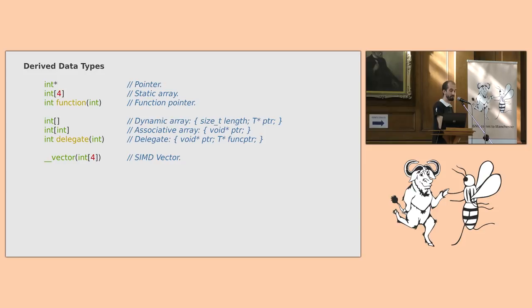We also have convenience types, whose underlying ABI, the data layout, is an aggregate. So, for instance, we have dynamic arrays, which consist of a size_t length and a pointer. Associative arrays are a runtime defined type. We actually know nothing about its contents. We just pass around the internal pointer. And delegates are exactly the same as a function pointer, except they come with a context. This context could be a stack frame, or a closure, or at this point, a method. And we also provide vector support, where the hardware says yes.